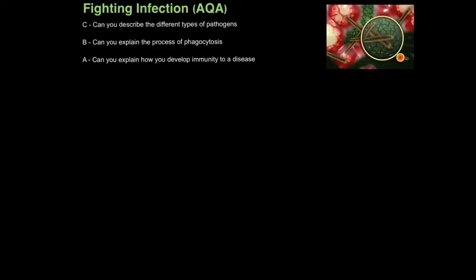In this tutorial, we'll be looking at how our body fights infection, and it's another AQA-specific tutorial. The first aim is, can you describe the different types of pathogens? Then, can you explain the process of phagocytosis? And finally, can you explain how we develop immunity to a specific disease?